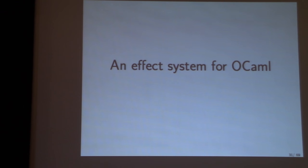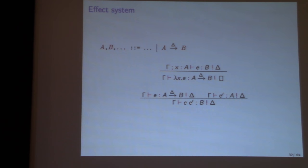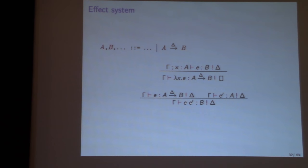What is an effect system? Broadly, A-to-B function types are annotated with a delta representing what effects they might perform. The typing judgment says not just 'expression E has type B' but 'expression E has type B and performs effects delta.' The lambda rule moves effects from the judgment up onto the arrow; the application rule moves them back. The requirements are: soundness (if we say a program does effects delta, it must only do things from delta); usefulness (don't just annotate everything with all effects); and backwards compatibility (everything typeable in OCaml now must still typecheck).